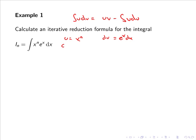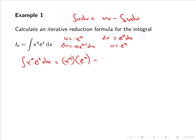Differentiating u gives du = n xⁿ⁻¹ dx, and integrating dv gives v = eˣ. Applying the integration by parts formula, the integral of xⁿ eˣ dx equals u times v, which is xⁿ eˣ, minus the integral of v times du, which is eˣ · n xⁿ⁻¹ dx. Tidying this up gives xⁿ eˣ − n ∫xⁿ⁻¹ eˣ dx.